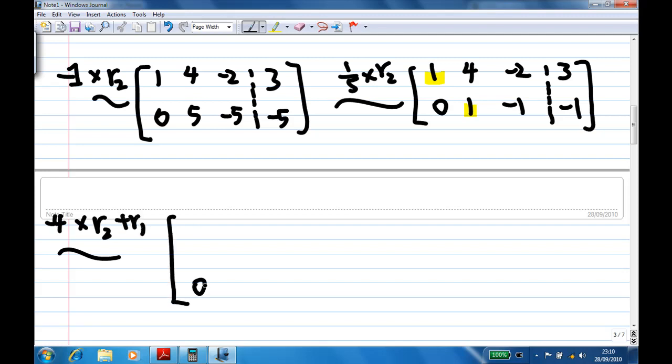I'll get the matrix 0, 1, minus 1, minus 1 in the second row. And the first row becomes 1, 0, 2, 7, because 4 minus 2 is 2, and 4 plus 3 equals 7. This is the row reduced form already.